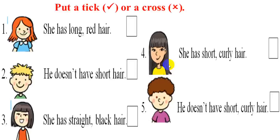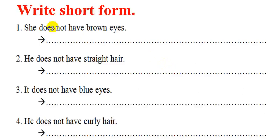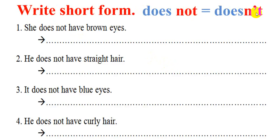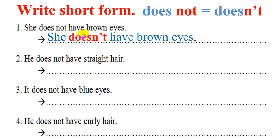It's time to write. Number one: She has long red hair. Is it correct? Yes. Do the others the same way. Write short form. Remember: does not becomes doesn't. So we write: she doesn't have brown eyes. Do the others the same.